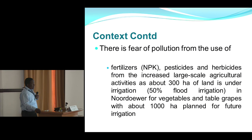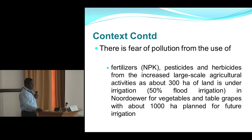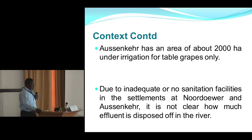Fears are arising about pollution due to the use of agrochemicals — fertilizers and herbicides — because the scale of agricultural activities is on the rise. Approximately 50 percent of irrigation is flood-based, accounting for about 300 acres of irrigated area. Future plans are to expand the irrigated area up to 1,000 acres for Nordware neighborhood, while Oscar neighborhood has an irrigation area of about 2,000 acres.